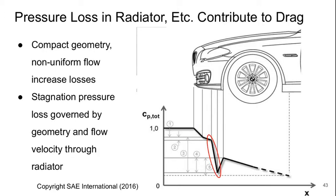The biggest contributor is the radiator where there's going to be a big pressure loss that's going to contribute to drag. Because you've got compact geometry and non-uniform flow that tend to increase the losses. And the stagnation pressure loss ends up being governed by the geometry of the radiator and the flow within it.